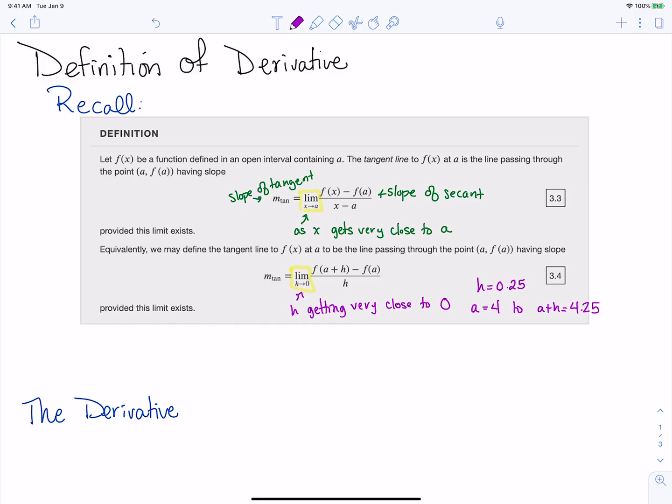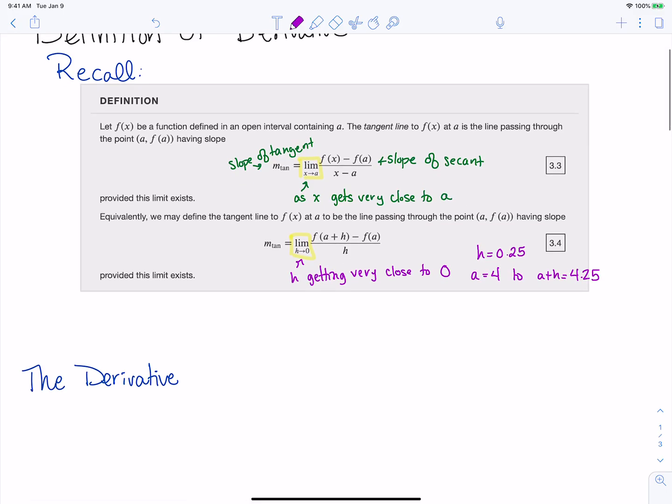This process of finding the slope of the tangent line is something we do a lot in calculus. It gives us many applications—when we're looking for velocity, change in profit, growth rates. Because this is such an important thing, we have a name for it.